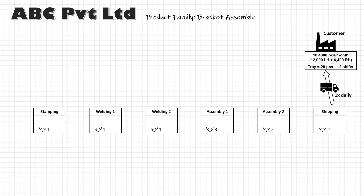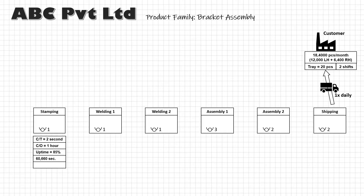Back to our original map. Now we will fill in some necessary information in the data box under each processing step, like cycle time, the changeover time to switch from producing one product type to another, and the available work time per shift. We can also add EPE — Every Part Every Some Time — which is a measure of production batch size. For example, if you produce five different parts and once produced the next turn for a particular part comes after 10 days, then your EPE is 10 days. That also means you need to have at least 10 days of inventory for that part.